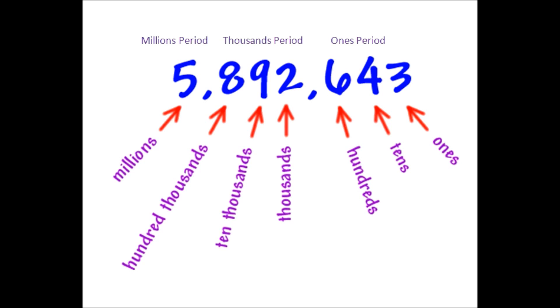On this page, I have a number 5,892,643. When I read this number, I read this number using the periods. You can see here this 5 is in the millions period. I read it as 5.